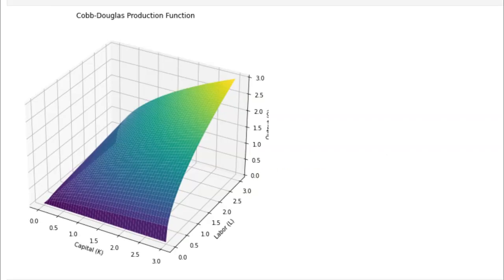Moving on to the graphs, the first one shows a 3D surface plot of the Cobb-Douglas production function. The x-axis represents the level of capital K, the y-axis represents the level of labor L, and the z-axis represents the level of output Q.